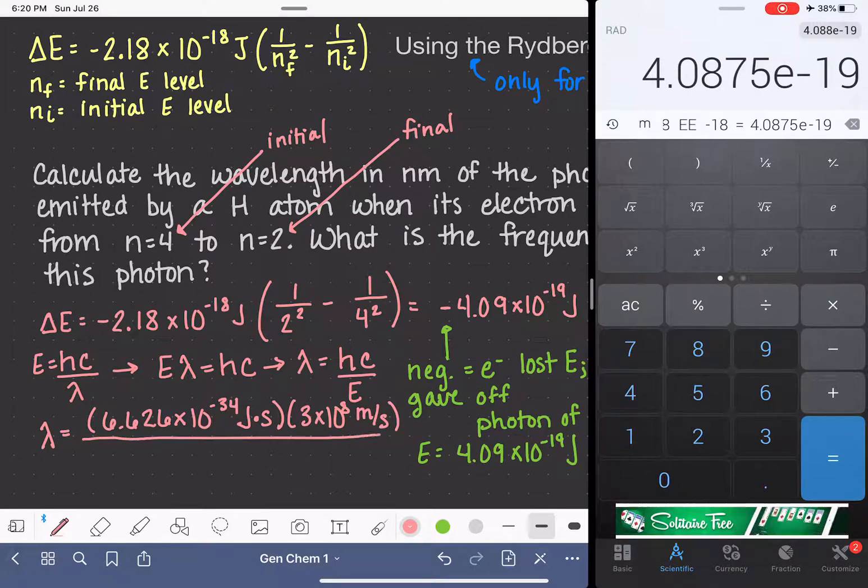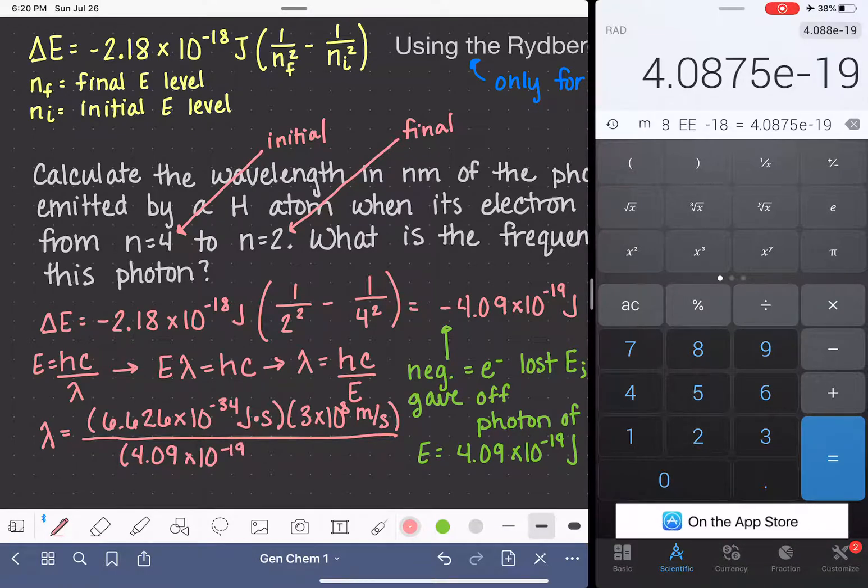And the energy, which is 4.09 times 10 to the negative 19 joules. You can see that when we do the math on this, our joule units will cancel, and our second units will also cancel, and our wavelength will be left in units of meters.